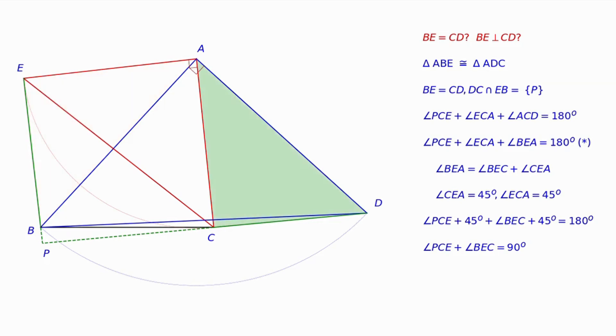Recall that angles PCE and BEC or PEC are two among three angles of the triangle PEC. Therefore, angle EPC is written as 180 degrees minus PCE minus PEC or equals 90 degrees.